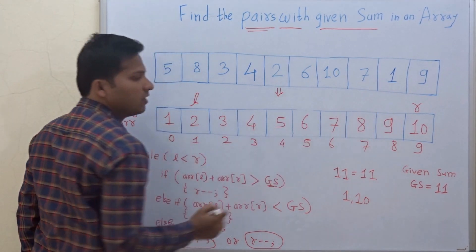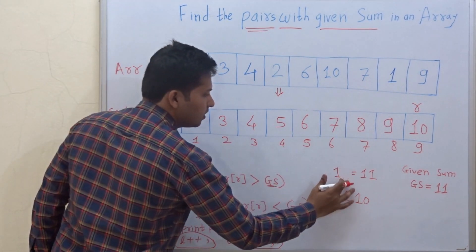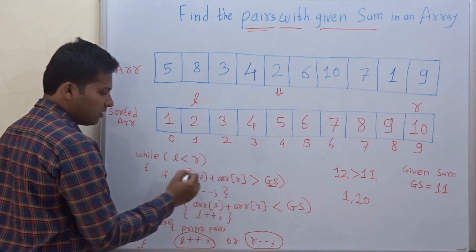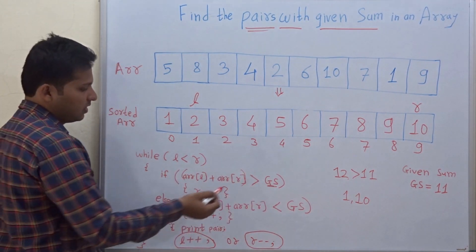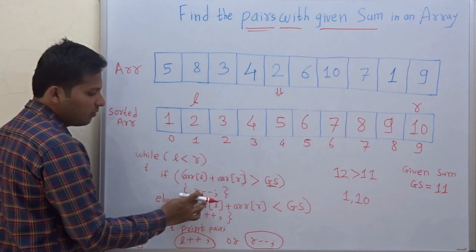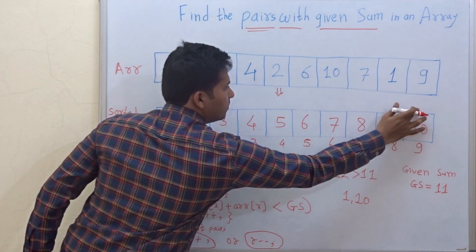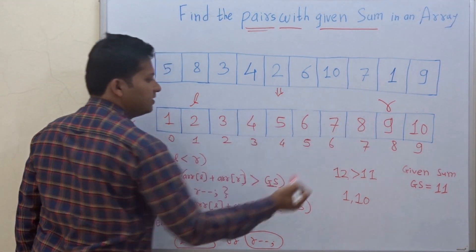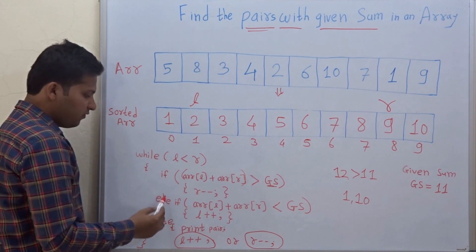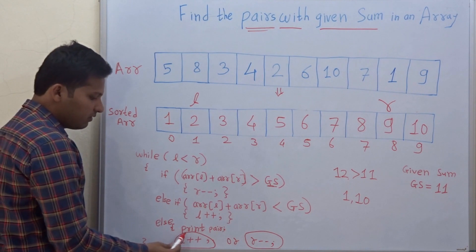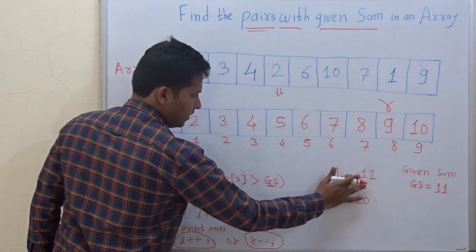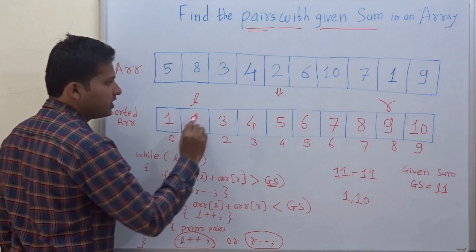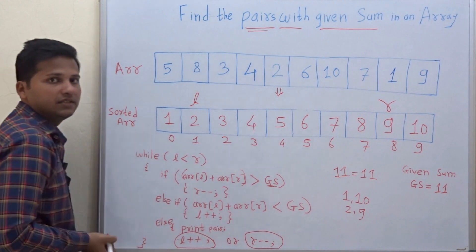Now check 2 plus 10, which is 12. Since 12 is greater than 11, the first if condition is satisfied, so we decrement R. Now 2 plus 9 is 11. Since that is equal to the given sum, the else condition is satisfied and we print the pair: 2, 9. Then we increment L.